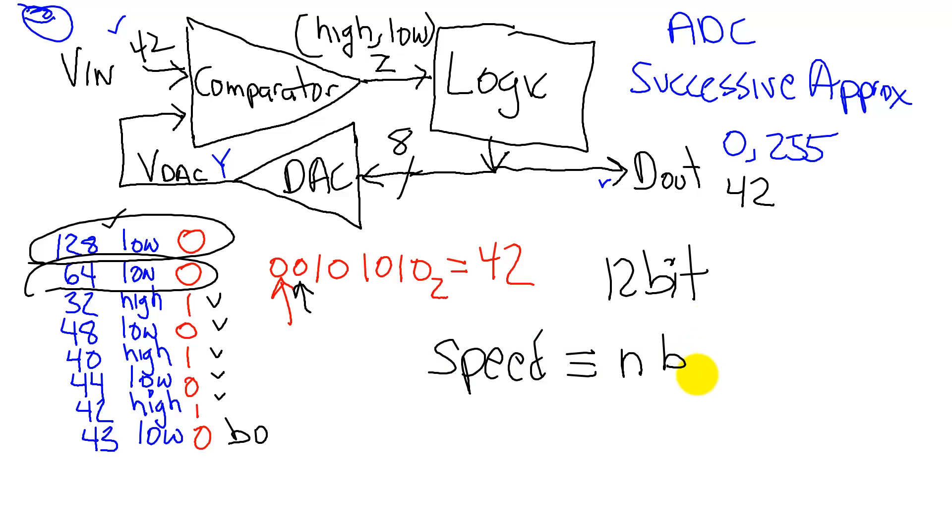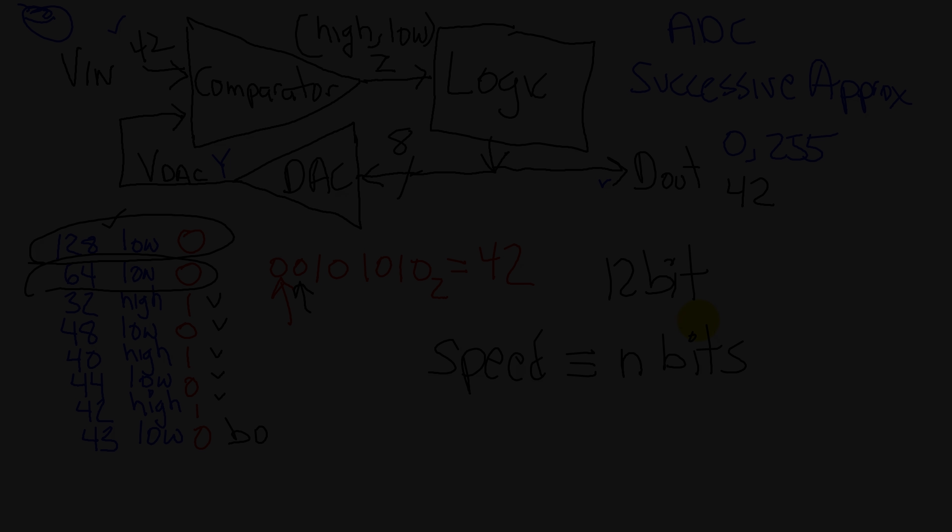So the ADC conversion speed is linear with the number of bits. Yes. That is, if I double the number of bits, it's going to take double the amount of time to reach an answer. Yes.